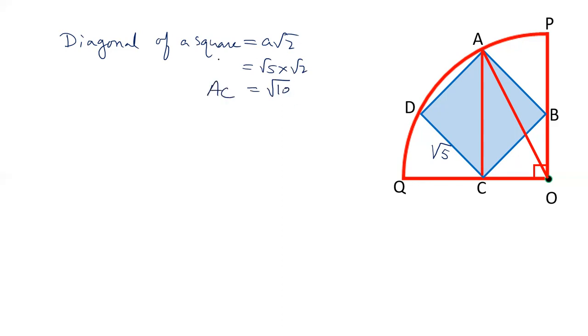This is the direct formula to find out the diagonal of square. We can also use Pythagoras theorem to get this value a√2. So we have AC equals √10. Now we need to know OC. How can we calculate OC?